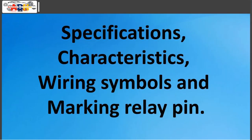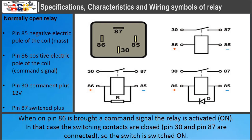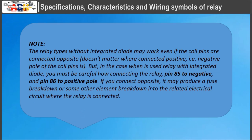Specifications, characteristics, wiring symbols, and marking relay pin. Normally open relay: when a command signal is brought on pin 86, the relay is activated. The switching contacts are closed, pin 30 and pin 87 are connected, so the switch is switched on. Some vehicle or engine management systems require a resistor to limit the current flow through the coil, or the use of a diode to dissipate the stored energy in the coil. Note: relay types without an integrated diode may work even if the coil pins are connected opposite. But when a relay with an integrated diode is used, you must be careful — pin 85 to negative and pin 86 to positive pole. If connected opposite, it may produce a fuse breakdown or element breakdown in the related electrical circuit.